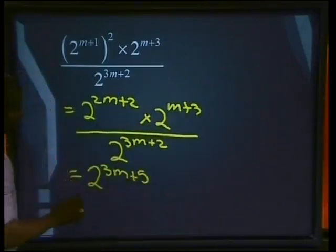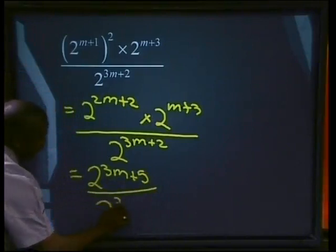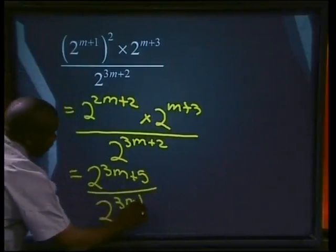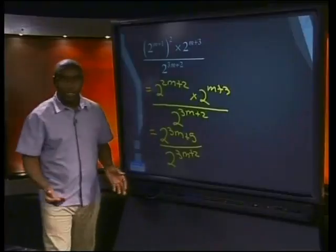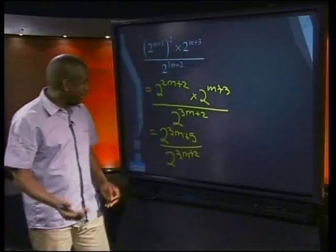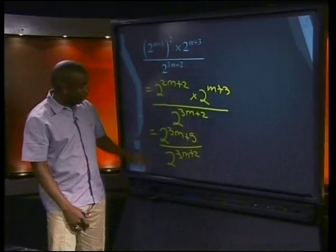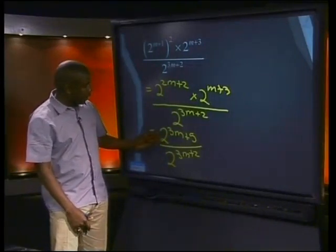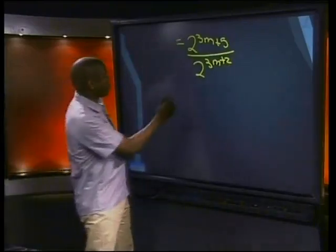5 divided by 2 to the power 3m plus 2. Right. So far, so good. Let's see now. What do we have here? It's division. Remember our second law? Law of division. It said when we're dividing, we can subtract the exponents. That's right. Let's see how we can do this now.